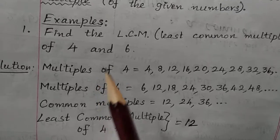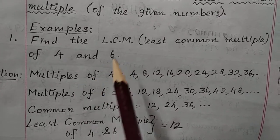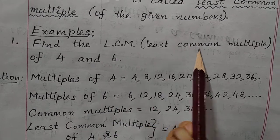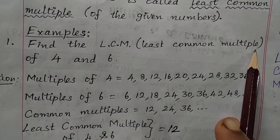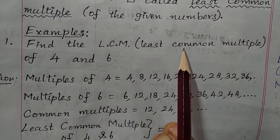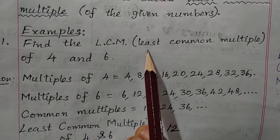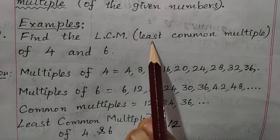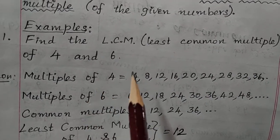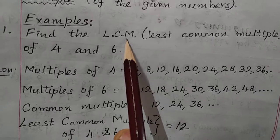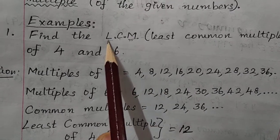Let us see some examples. Find the LCM of 4 and 6. LCM means least common multiple. We have to find the multiples of 4 and 6 first, then find common multiples, then find least common multiple. First multiples, then common multiples, then least common multiple.